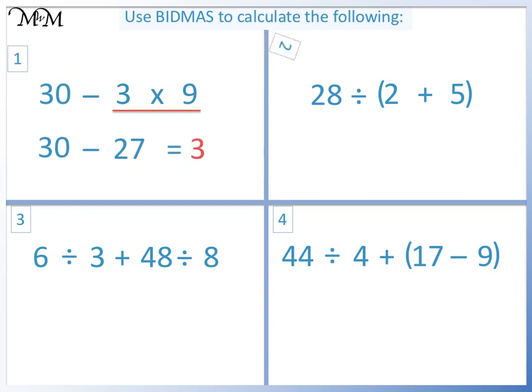Question 2. We have B for brackets. 2 plus 5 equals 7. 28 divided by 7 equals 4.